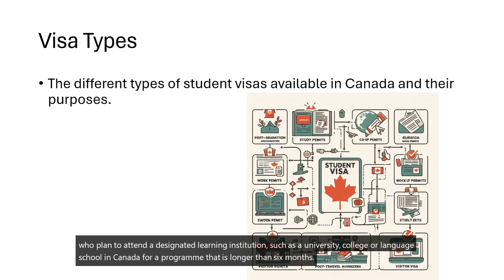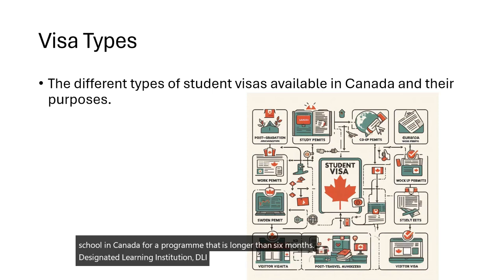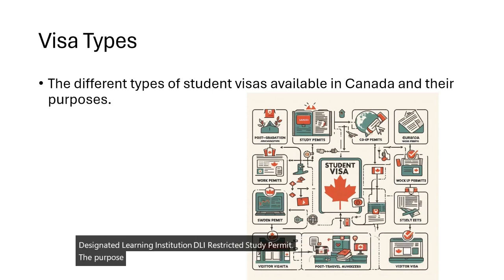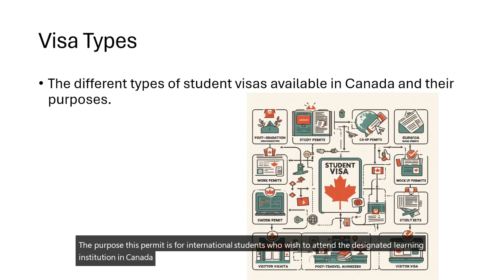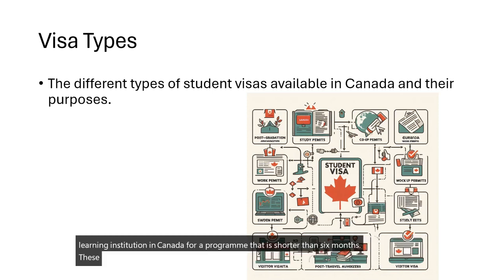Designated Learning Institution (DLI) Restricted Study Permit: This permit is for international students who wish to attend a designated learning institution in Canada for a program that is shorter than six months. These programs do not qualify for regular study permits.